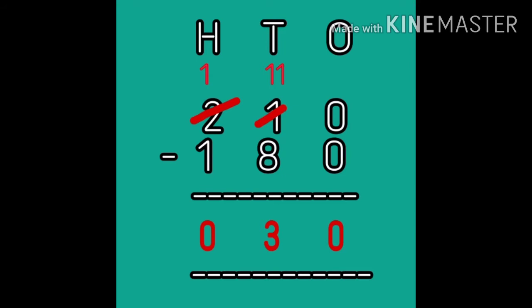Now let's come to the tens digit: one minus eight — is it possible to subtract eight from one? No. So we will take a borrow from the hundreds digit. Two will become one, and the tens digit one will become eleven. Eleven minus eight is equal to three. Now hundreds: one minus one is equal to zero. So the difference is 30, and the answer is: 30 pages are left unread.